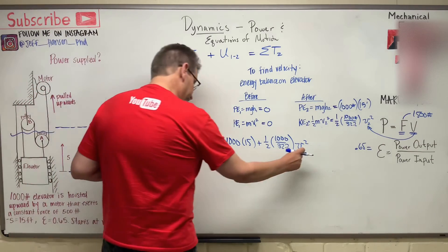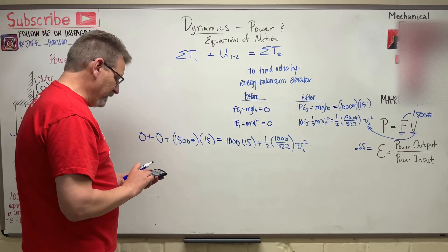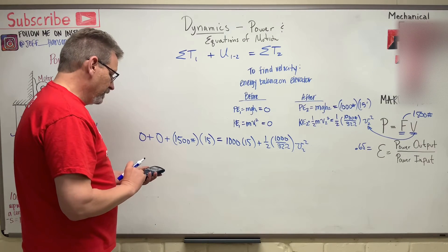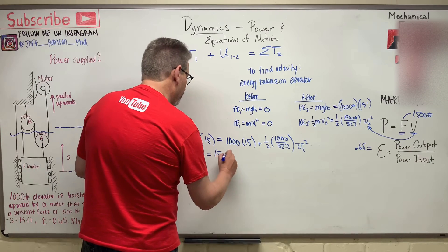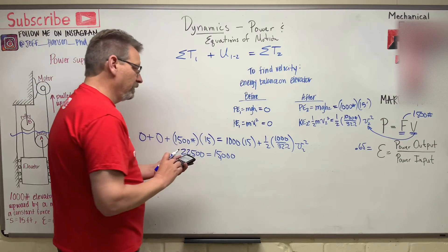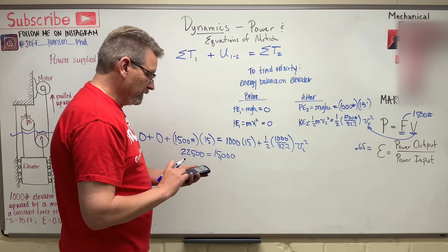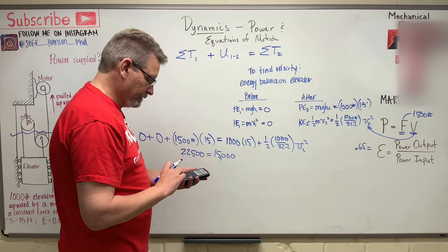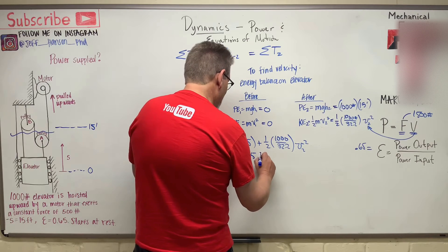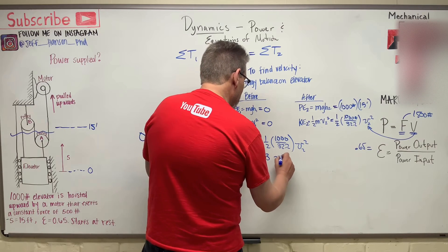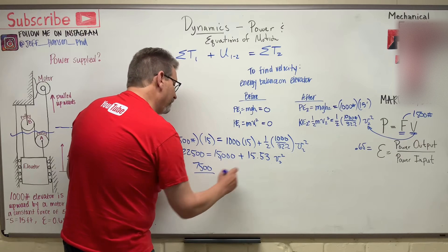So, oh, clear, clear. 15 times 1,500 is 22,500 is equal to, that's 15,000. And then what's that over there? 1,000 divided by 32.2 divided by 2. No, it's times 1 half. Oh, it's the same thing. So plus 15.53 and then V2 squared. So let's move that to the other side. That's 7,500. Divide that by 15.53.